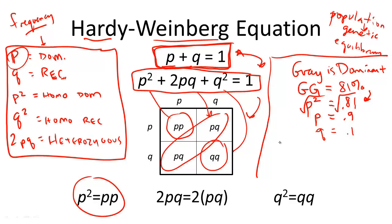But we're not finished yet. We know p, we know q. But all we have is the frequency for homozygous dominant alleles. Since having gray fur is dominant, it can also be heterozygous, represented by G little g.